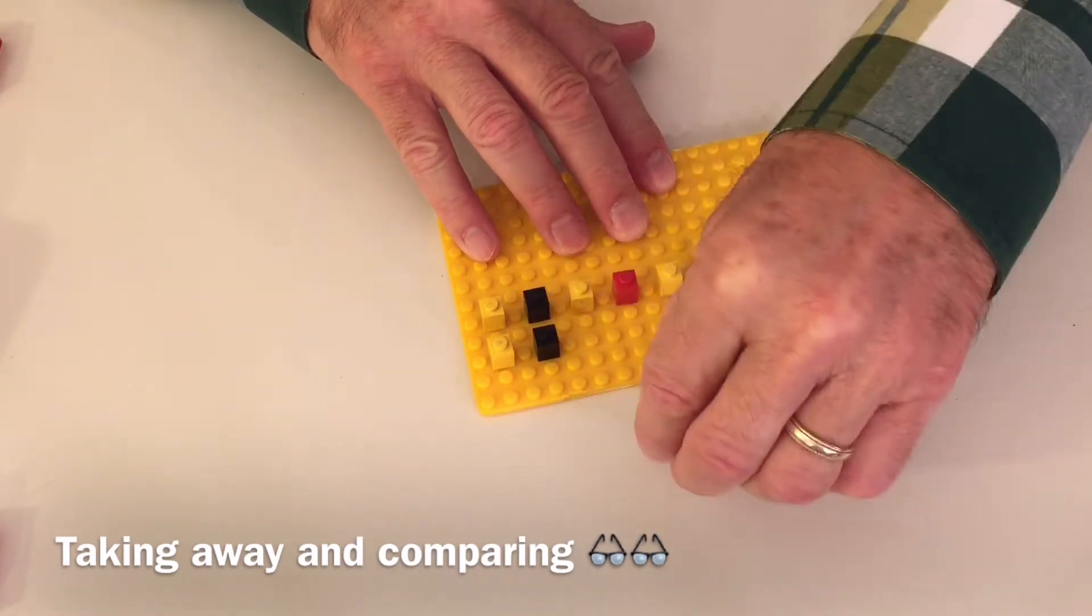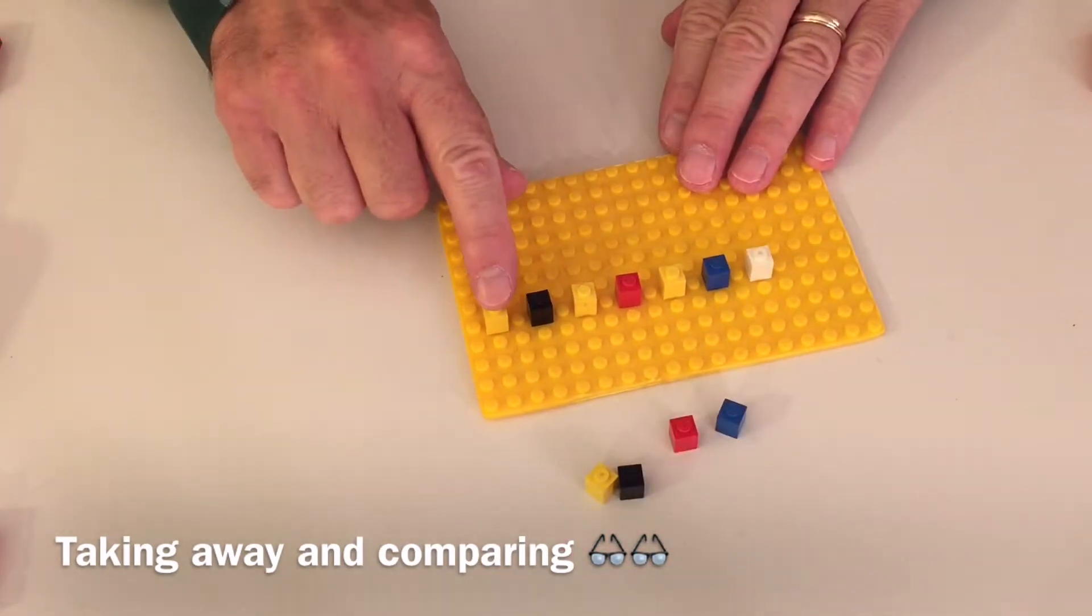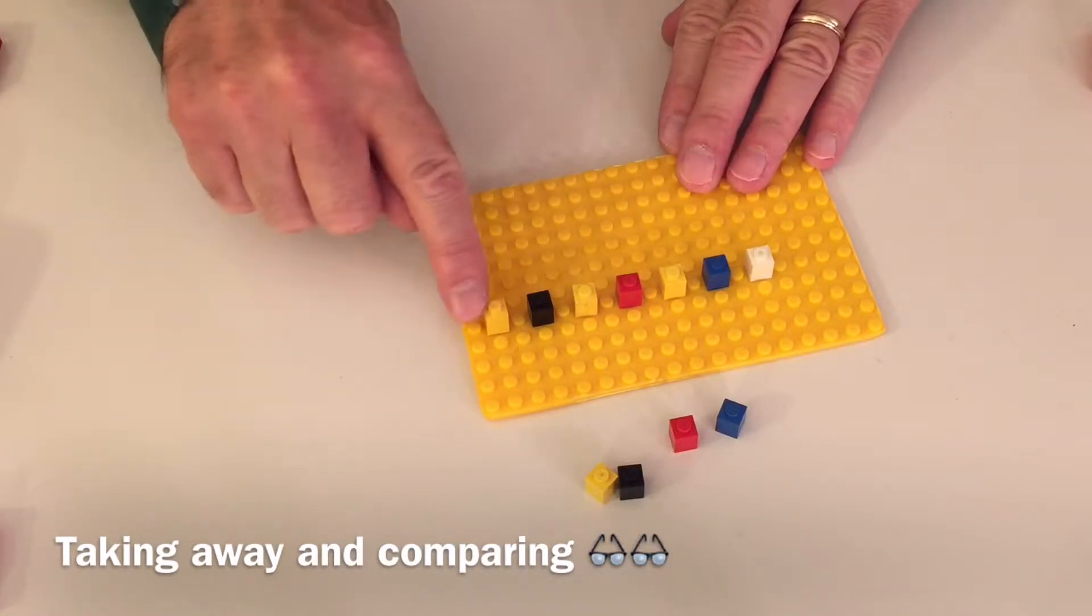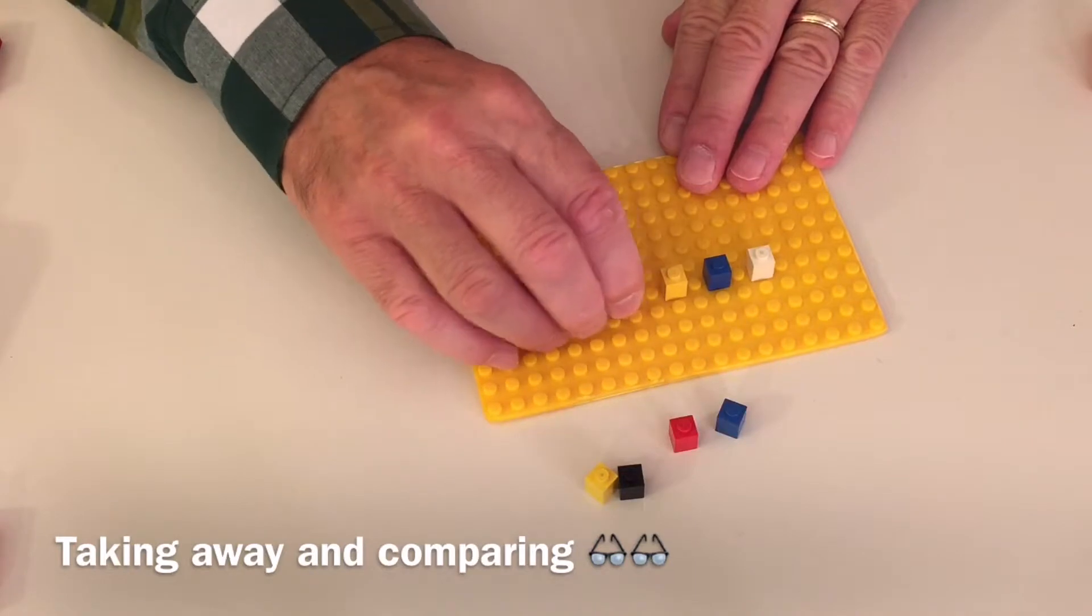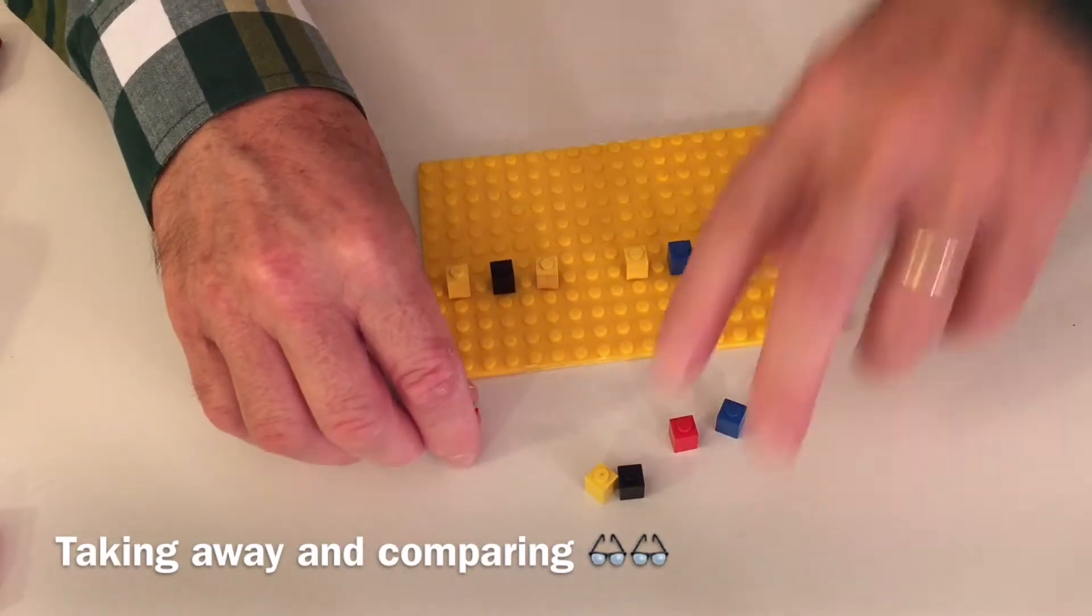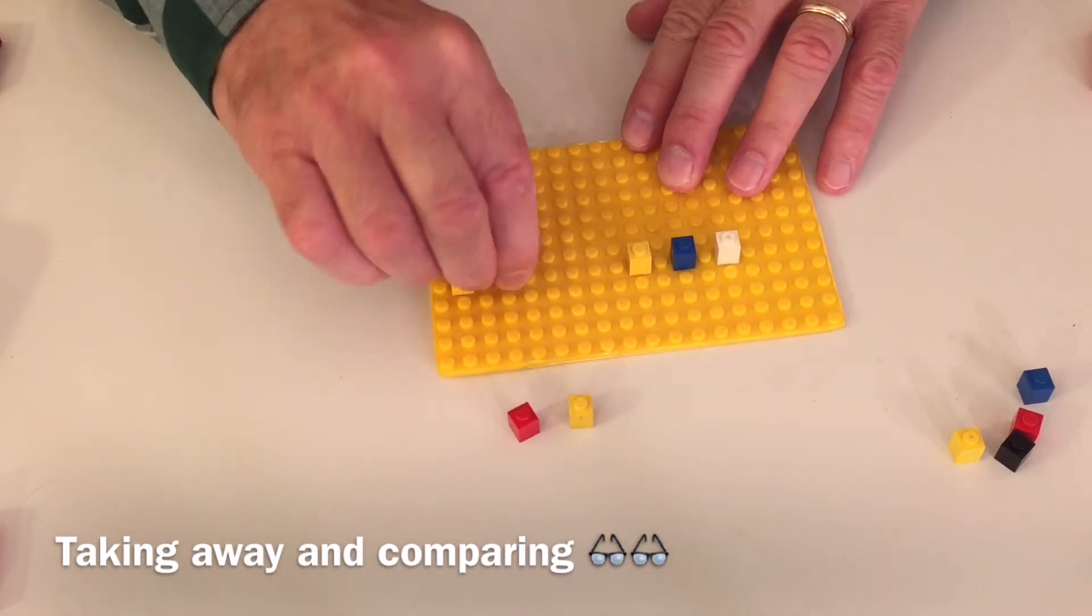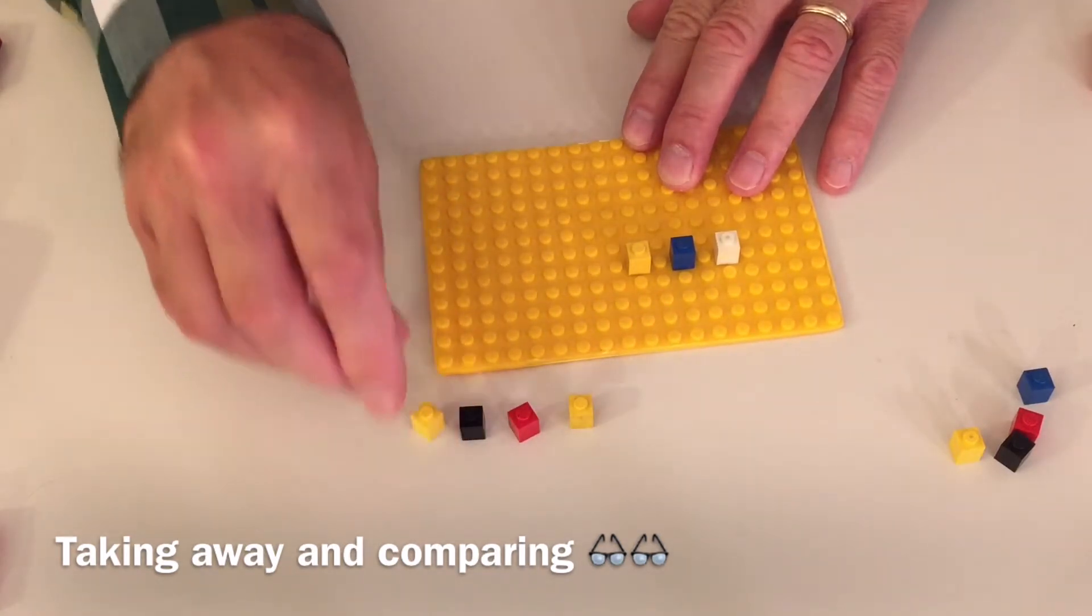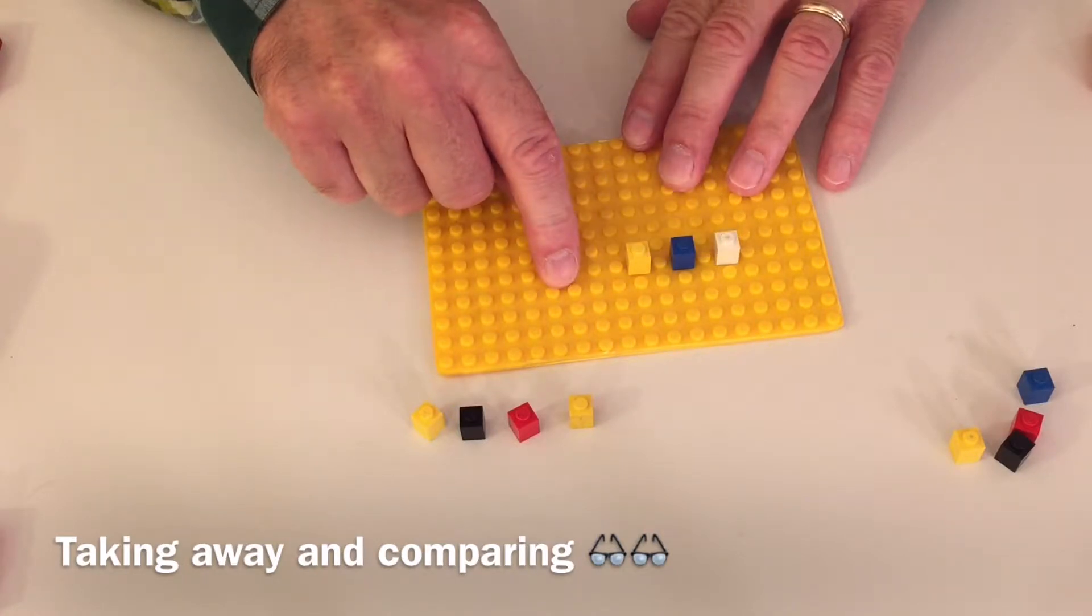So let's try again. We did the comparison method. We're going to do subtraction. Seven minus four. One, two, three, four. I'm going to take them away. One, two, three, four. Seven minus four was three that are left over.